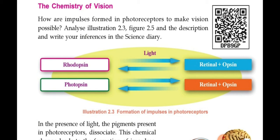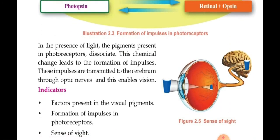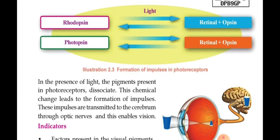When rhodopsin and photopsin are dissociated — that is, divided into retinal and opsin — impulses are also formed at the same time. So when rhodopsin is dissociated, retinal and opsin are formed, and along with that, impulses are also formed. These impulses are carried to the optic nerve. So the image formed in the retina sends impulses via the optic nerve to the brain.